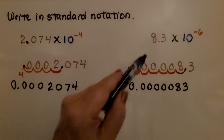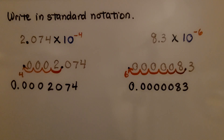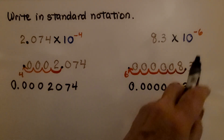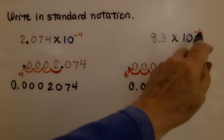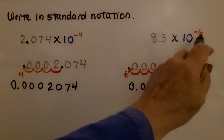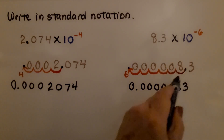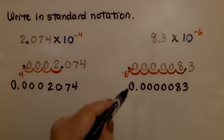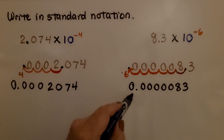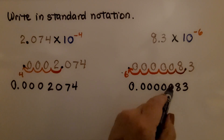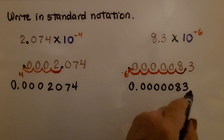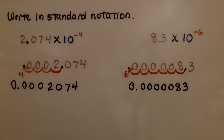Here we have 8 and 3 tenths times 10 raised to the negative 6th power. We see this negative 6th power and know we're going to jump 6 spaces to the left. That gives us 0.000083 in standard notation.